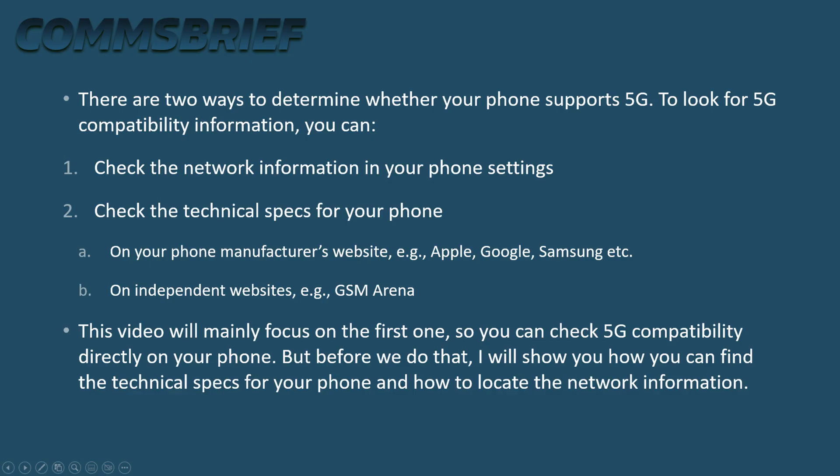There are two ways to determine whether your phone supports 5G. To look for 5G compatibility information you can check the network information in your phone settings, or you can check the technical specs for your phone. You can find the technical specs on your phone manufacturer's website, for example Apple, Google, or Samsung's website, or on independent websites like GSM Arena. This video will mainly focus on checking 5G compatibility directly on your phone, but first I'll show you how to find the technical specs and locate the network information.